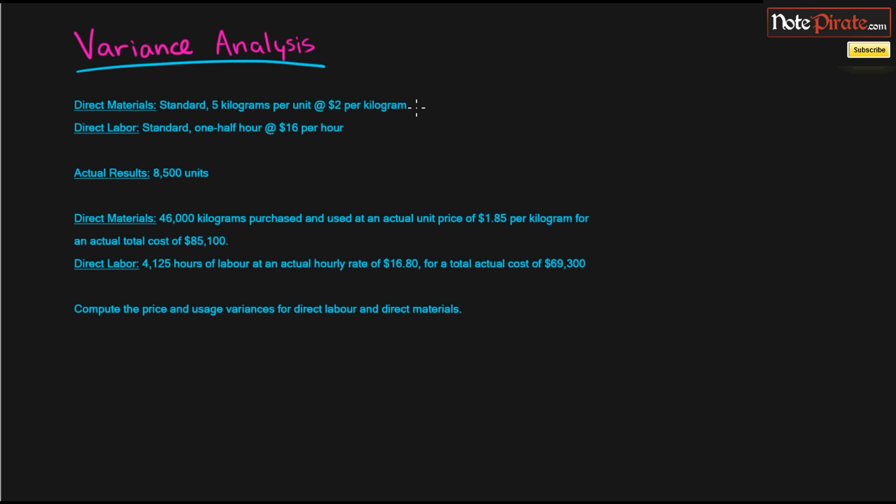What we have is direct materials and direct labor, and these are the standard amounts and the standard prices. And we have the actual results of how many units we produced. And we have the actual results for direct materials and direct labor for the amounts and their prices.